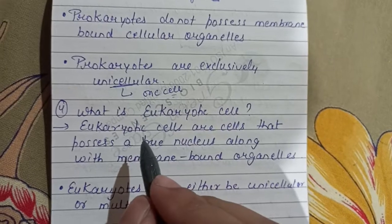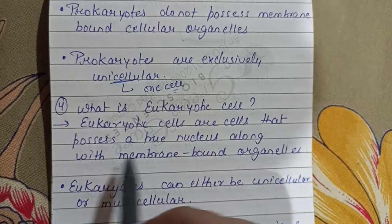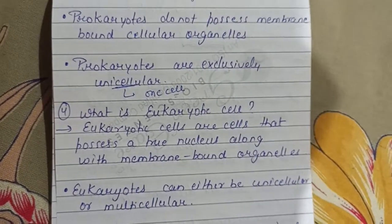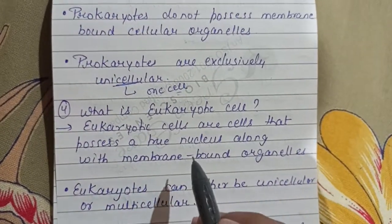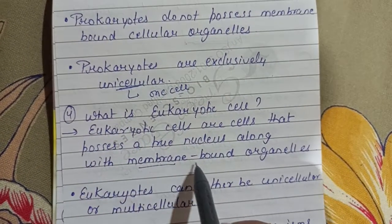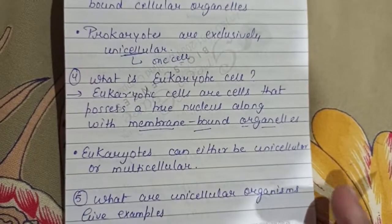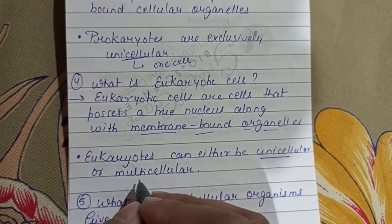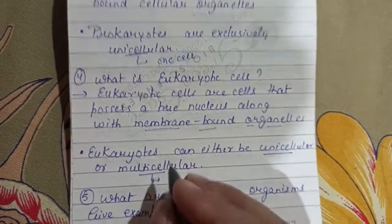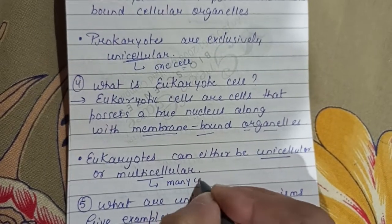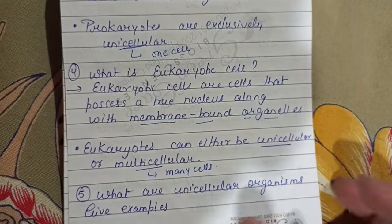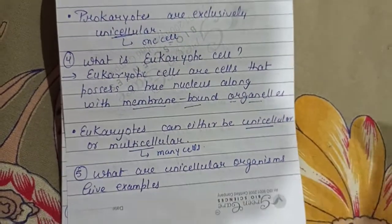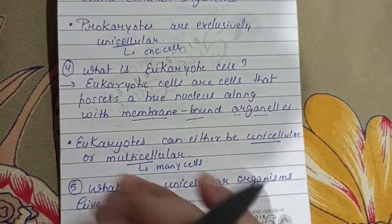Next question: What is a eukaryotic cell? Eukaryotic cells are cells that possess a true nucleus along with membrane-bound organelles. Eukaryotes can be either unicellular, meaning one cell in the body, or multicellular, meaning many cells in the body. Such organisms are known as eukaryotes.